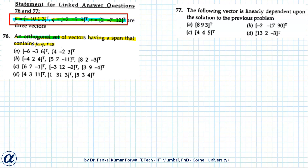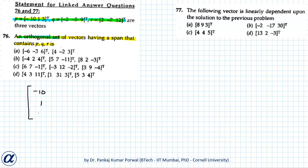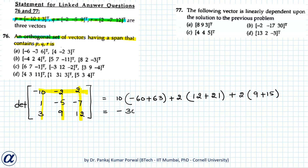The vectors p, q, and r as given in the paper are linearly independent, and we can verify this using the matrix rank method. We construct a matrix with columns as vectors p, q, and r, giving the matrix: [−1, 0, 1; 3, −2, −5; 9, 2, −7; 12]. The determinant of this matrix equals 84, which is not zero, so the rank is 3, implying all columns are linearly independent.